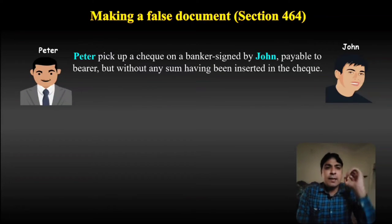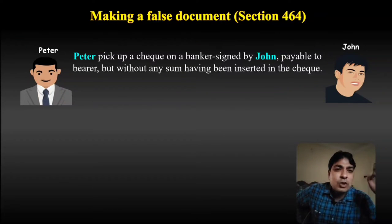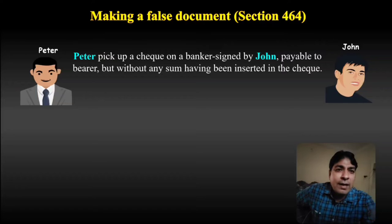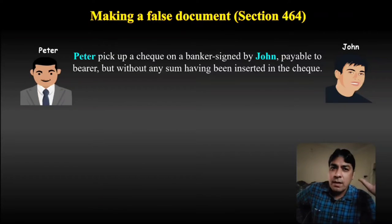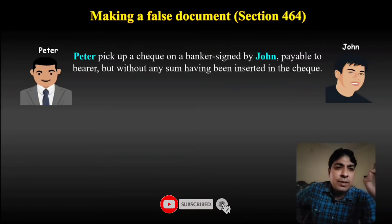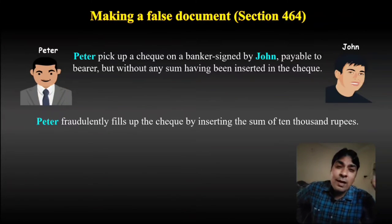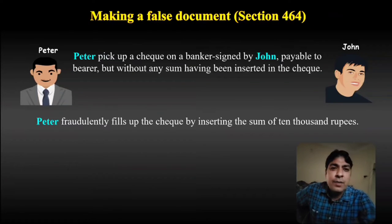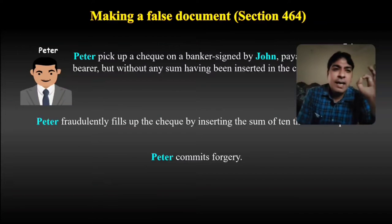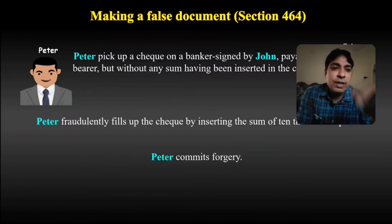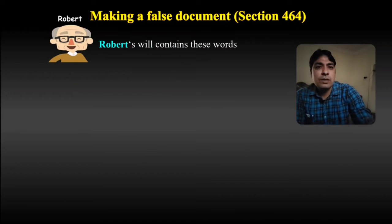Now see this example: Peter picks up a cheque on a banker, signed by John, payable to bearer but without any sum having been inserted in the cheque. So Peter picked up a blank cheque from the bank signed by John — it was a bearer cheque with no amount entered. Peter fraudulently fills up the cheque by inserting the sum of 10,000 rupees and withdraws it. Peter commits forgery — Peter is liable for the offense of forgery.